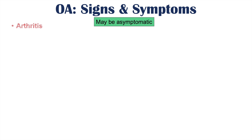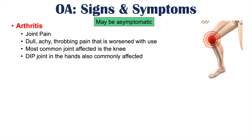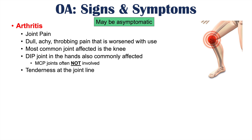Some patients with osteoarthritis are asymptomatic. If symptoms are present, there is joint pain described as dull, achy, or throbbing, worsened with use. Commonly affected joints include the knee and the DIP joint of the hand. The MCP joint is classically not involved, though it can be in some cases. On examination, there is tenderness at the joint line.